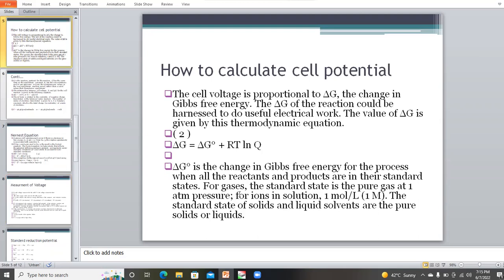This is how we can calculate the cell potential. The cell voltage is proportional to change in G. Del G is the change in Gibbs free energy, the term used in thermodynamics. The change in Gibbs free energy of the reaction could be harnessed to do electrical work. The value of Gibbs free energy is given by this thermodynamic equation. Change in Gibbs free energy is equal to the standard change in Gibbs free energy plus RT times ln Q, where R is the gas constant and T is temperature.